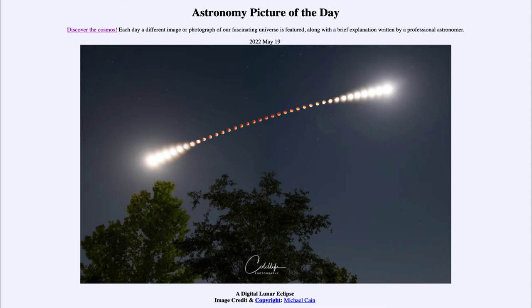We can see that at either end, the moon is being illuminated by the sun and is quite bright — much brighter on the two ends — and it seems much dimmer in between. That's not because of a change in exposure or anything like that. It is simply because the moon was in Earth's shadow and therefore looked much fainter than it otherwise would.